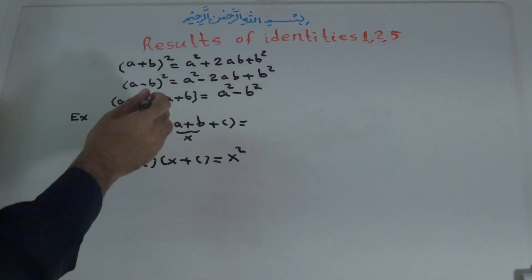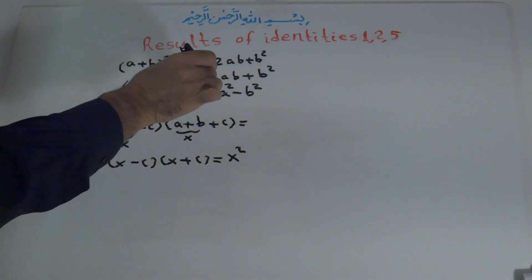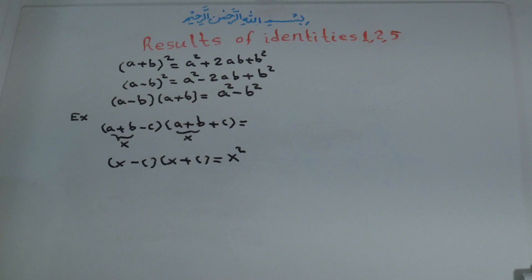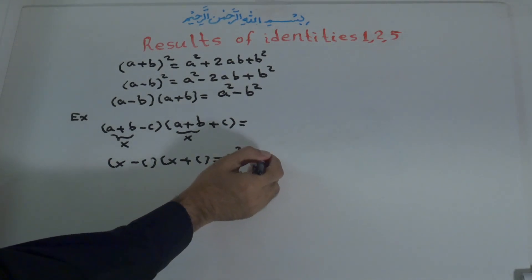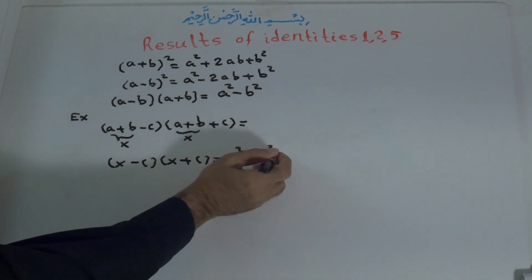...using identity number five, x minus c times x plus c equals x to the power of two minus c to the power of two.